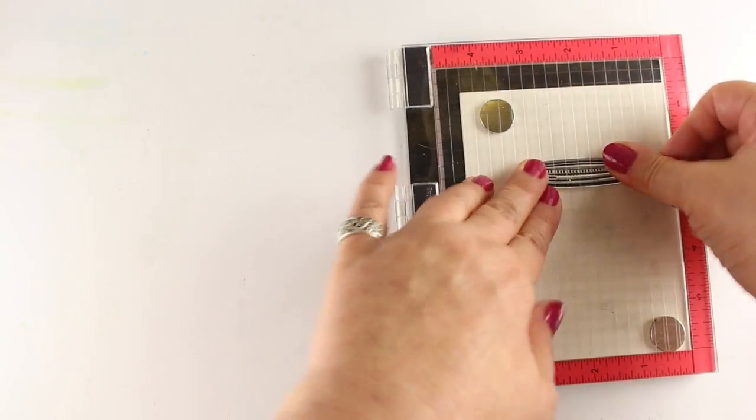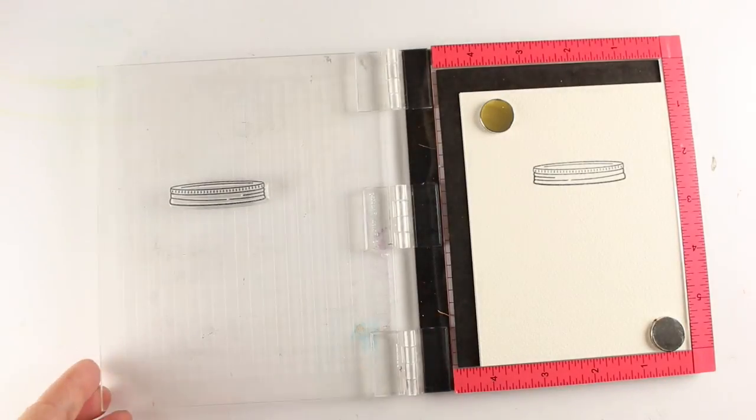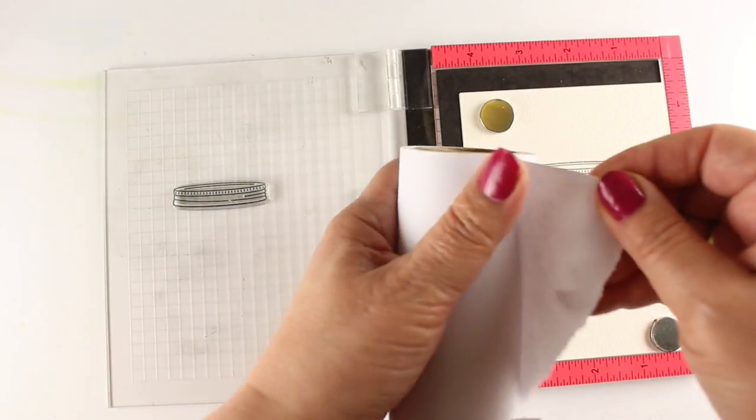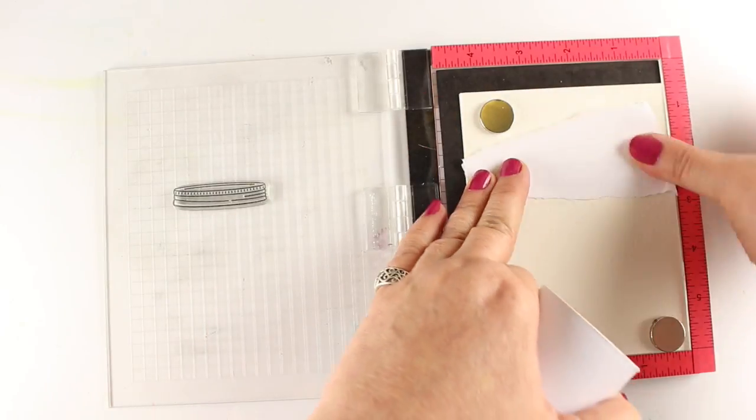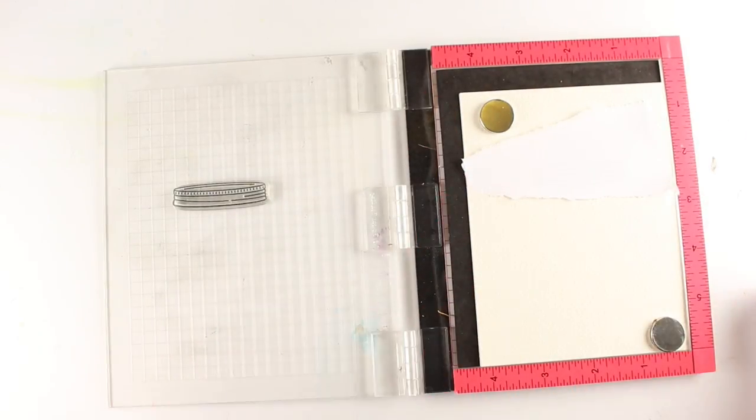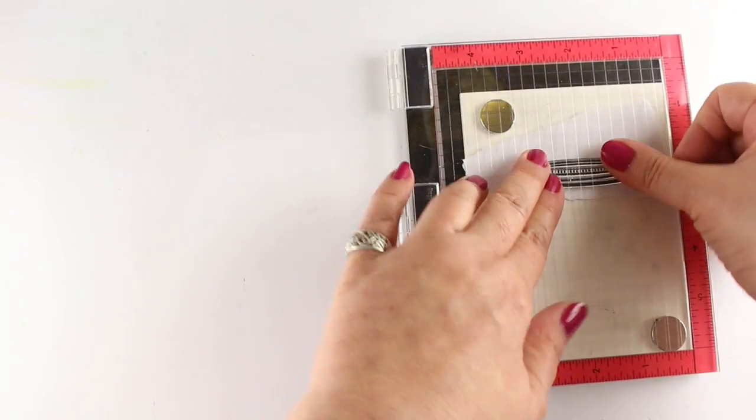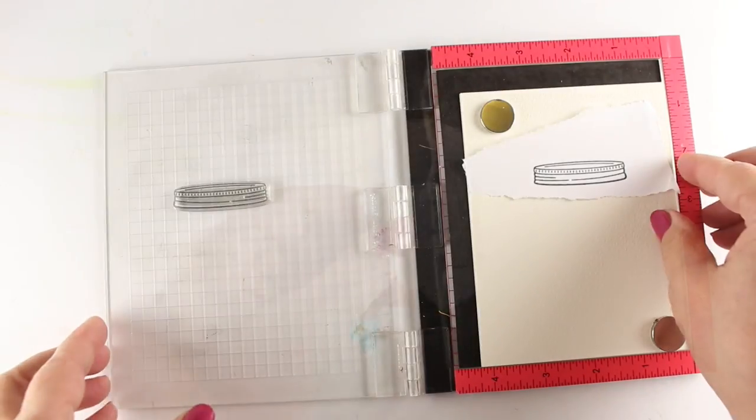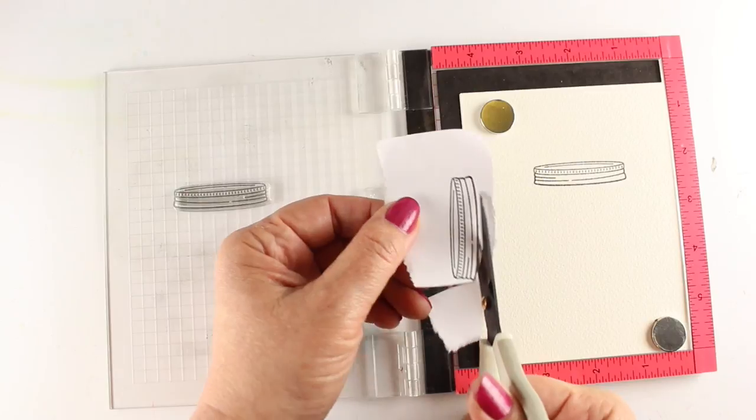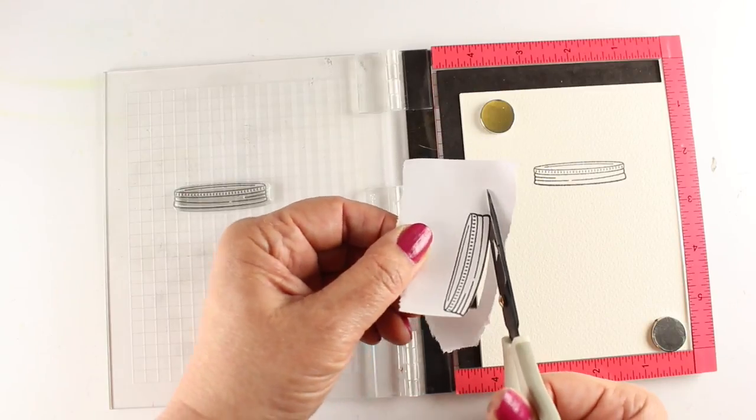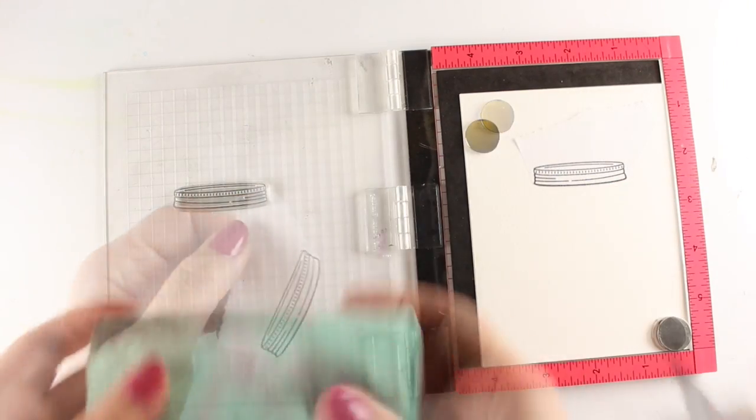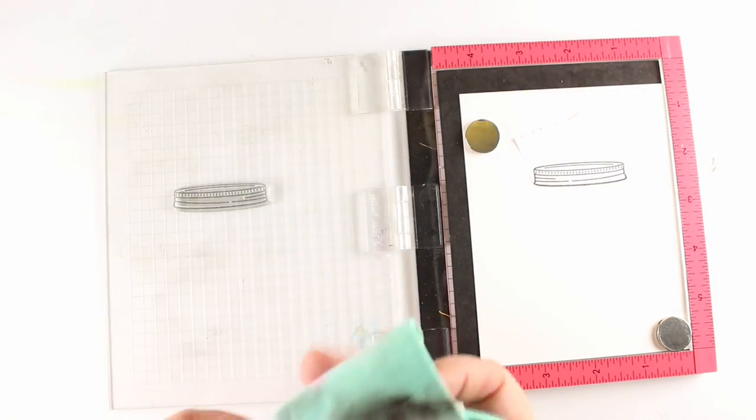So I'm going to stamp on both Nina and on some Arches cold pressed watercolor paper. And I'm going to make a mask for the lid. And for that, I'm just going to use some Eclipse tape. It comes in small rolls and big rolls. I just use a big roll because I can tear off a little piece and then trim it out with my little detail scissors so that I can mask it out and block it off when I stamp the jar.